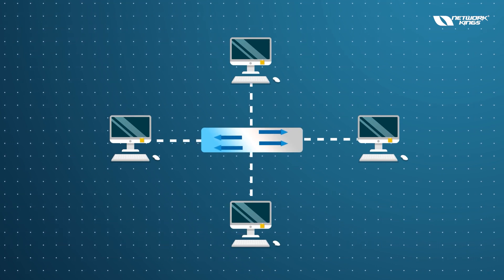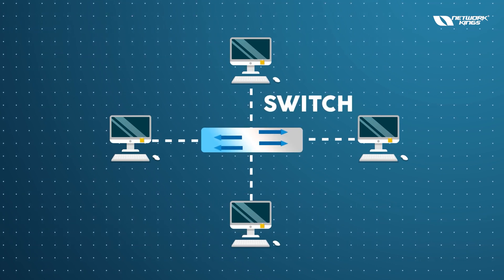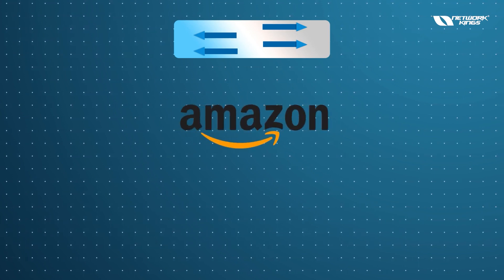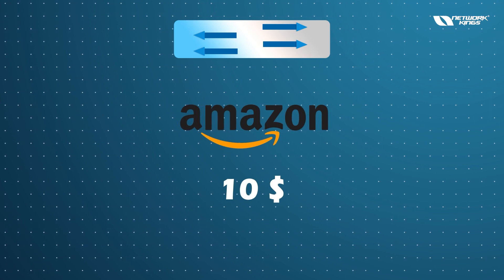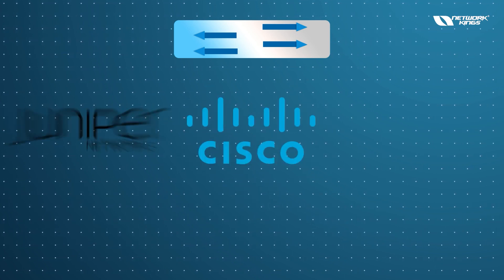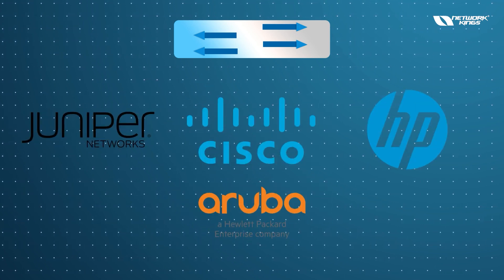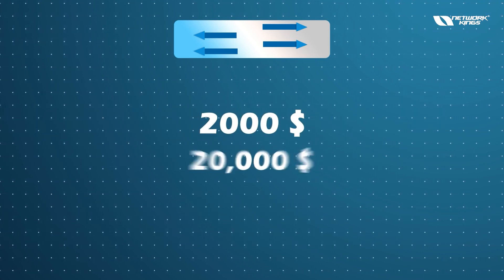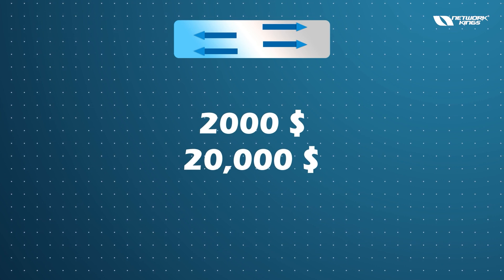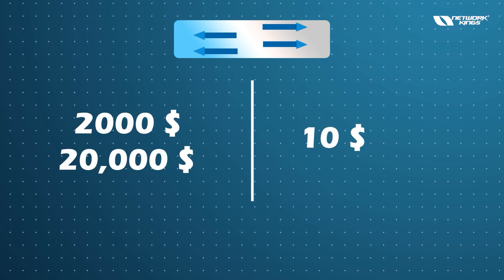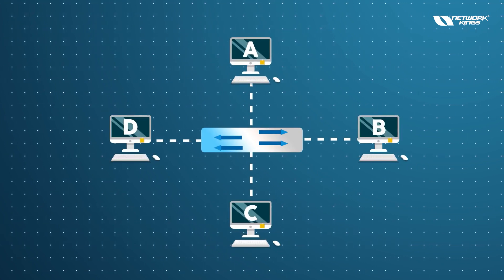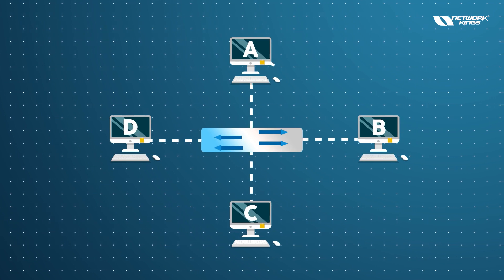When we buy switches from Amazon or any website, they start from $10. Big companies like Cisco, Juniper, HP, and Aruba have switches that cost $2,000 or even $20,000. The difference between a $10 and a $2,000 switch is basically the features.